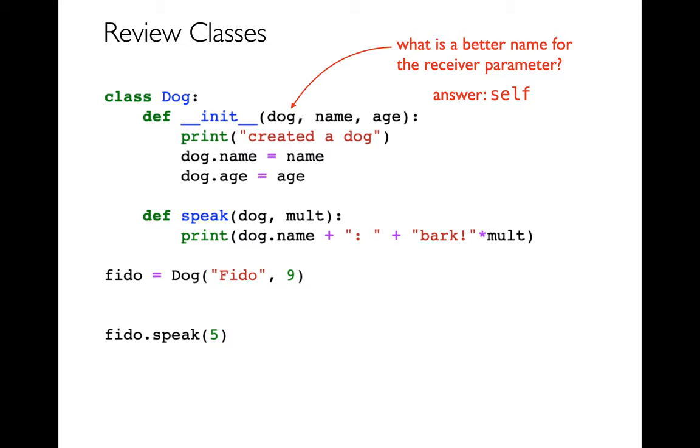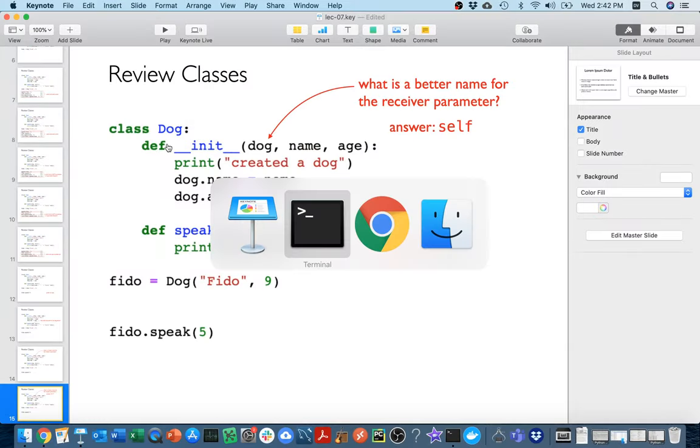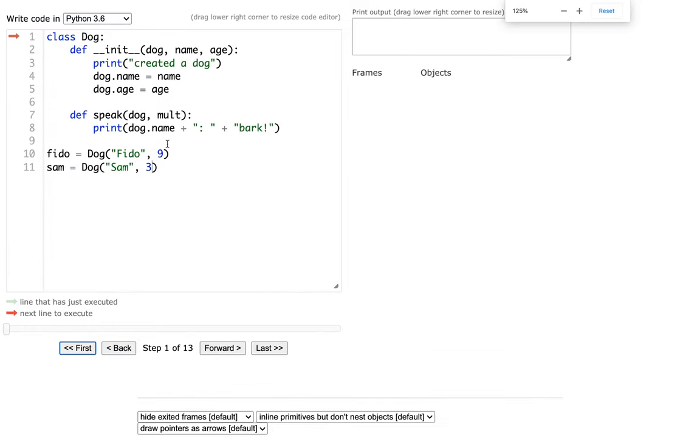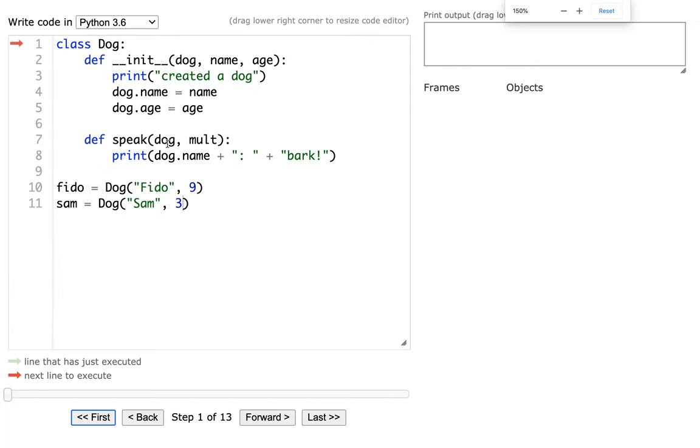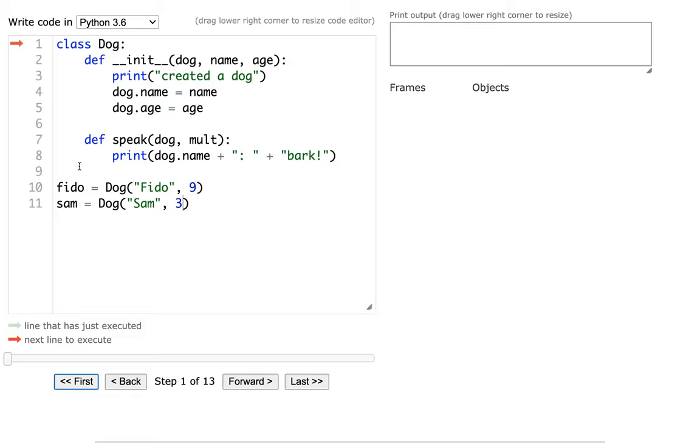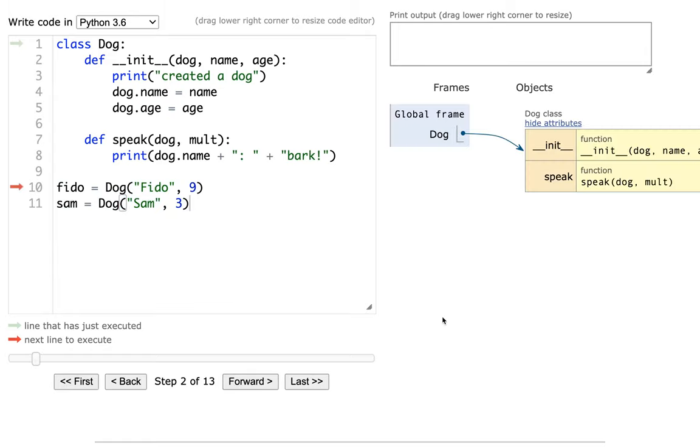Now I want to just, before I wrap this up, I want to step through it in Python Tutor as well, just to kind of really understand how this all works. So this is the code we've been dealing with. You can see I'm creating two different dogs. And so let's step through this.